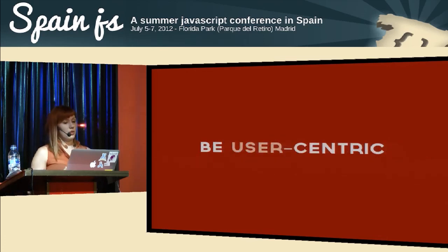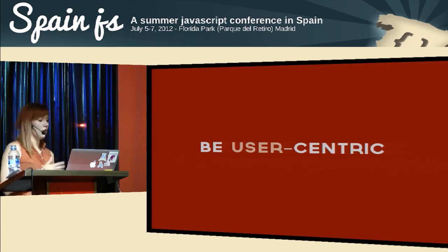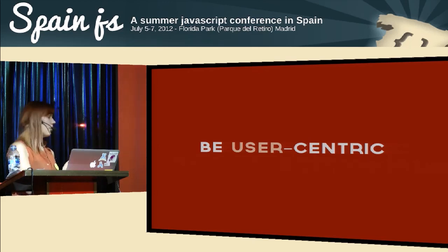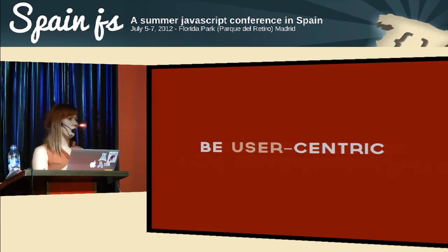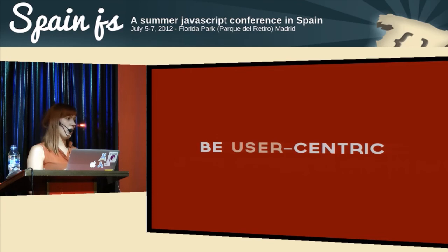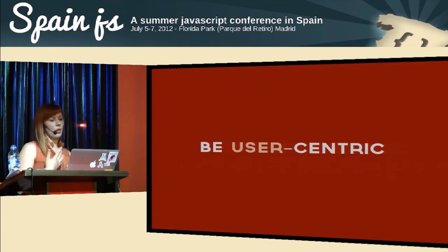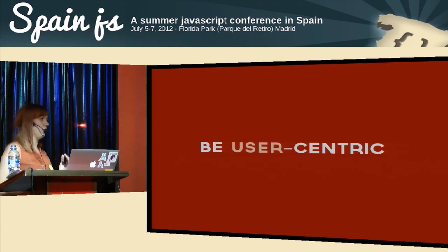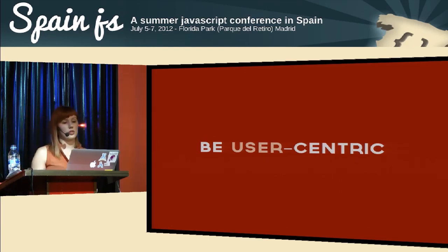The thing to remember is to be user-centric. Base all of your decisions on that — think about the end user, and also think about your team, because most of you are probably working on teams. You need to organize your code in a way that someone can dive into it easily with no problems. Using cutting-edge features won't necessarily be good for the projects you're working on.